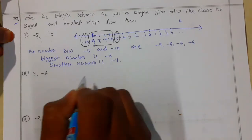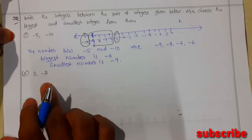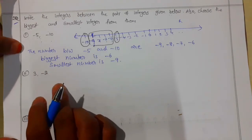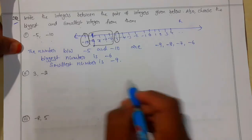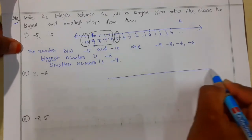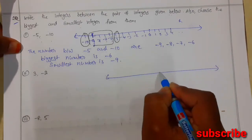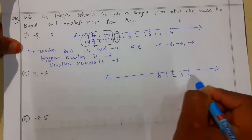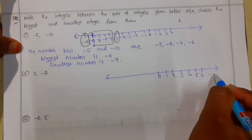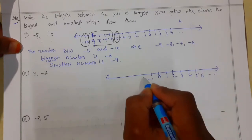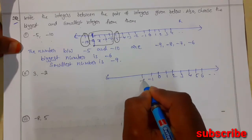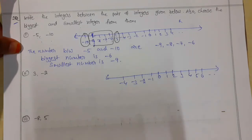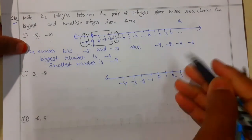Now for the second question, we have 3 and minus 2. Let me draw the number line: 0, 1, 2, 3, 4, 5, 6 and so on on this side, and negative numbers minus 1, minus 2, minus 3, minus 4 on the other side. Now let me mark the numbers given to us: 3 and minus 2.